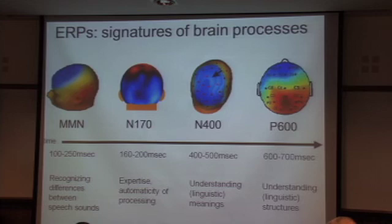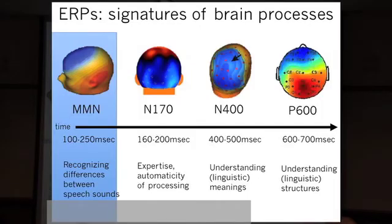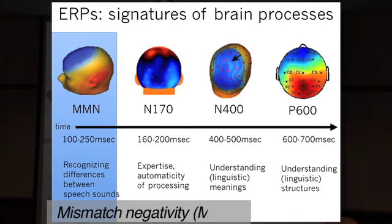An early ERP — one that happens very soon in the processing stream — is one that we call MMN. It stands for mismatch negativity. The MMN happens around 100 milliseconds.